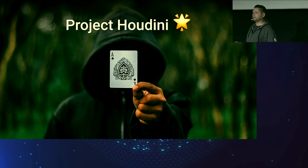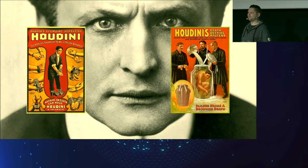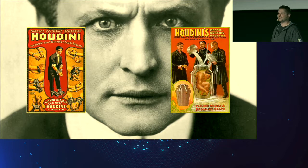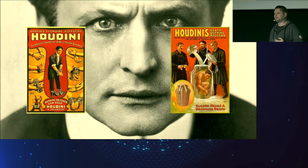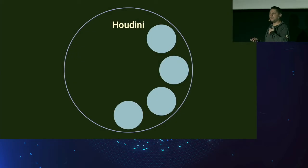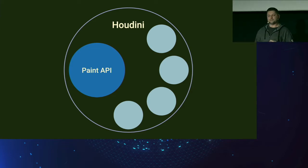Does anybody know what Houdini — the CSS Houdini project — is? Usually when people hear about Houdini, they imagine the magician from the 19th century who did some performances. The name was taken for the CSS APIs project because it's also a kind of magic — it gives you the ability to extend CSS engine possibilities with custom APIs. Today I'm going to focus only on one API: CSS Paint API, which is just part of the whole Houdini ecosystem.